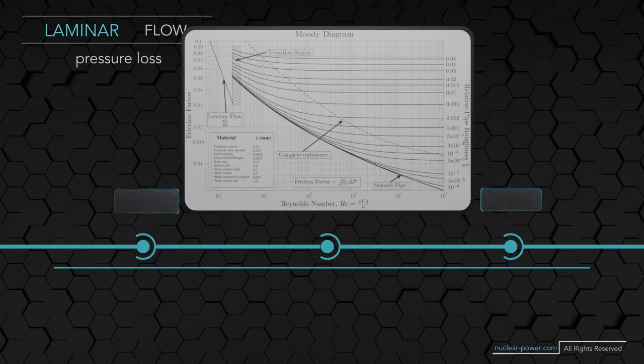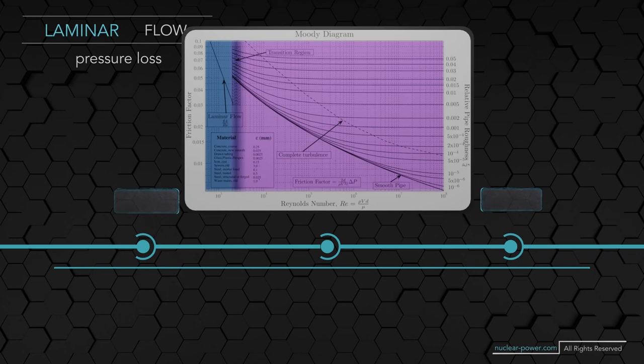The most common method to determine a friction factor for turbulent flow is to use the Moody diagram. The Moody diagram, also known as the Moody chart, is a log-log plot of the Colebrook correlation that relates the Darcy friction factor, Reynolds number, and the relative roughness for fully developed flow in a circular pipe. The Moody chart can be divided into two regimes of flow, laminar and turbulent. For the laminar flow regime, roughness has no discernible effect, and the friction factor decreases as the Reynolds number increases. It is only a function of the Reynolds number, so we get a straight line on the Moody diagram.